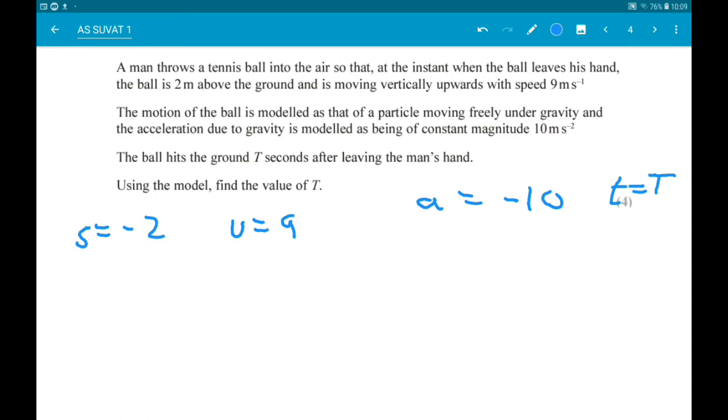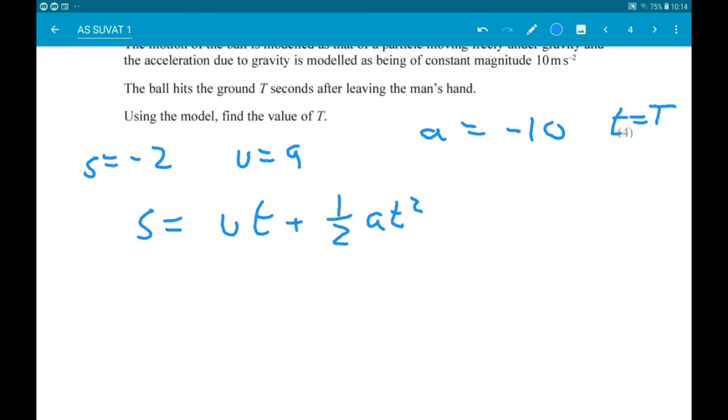Okay, so the one we can use here is S equals UT add one-half AT squared. Alright, so let's put in what we know. We get minus 2 equals 9T add one-half times minus 10 times T squared. So one-half times minus 10 is minus 5, so we get minus 5T squared.